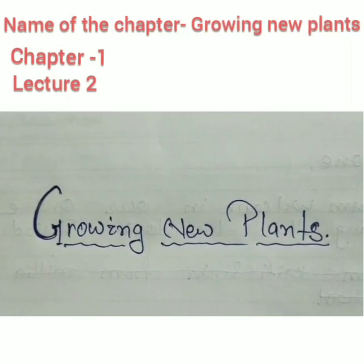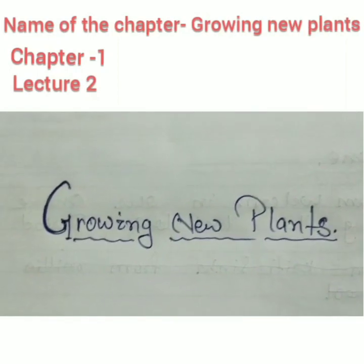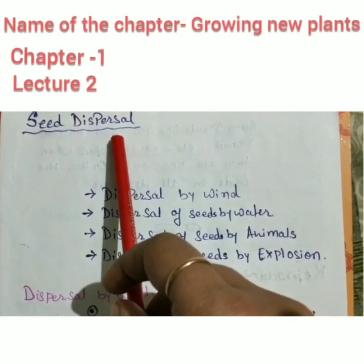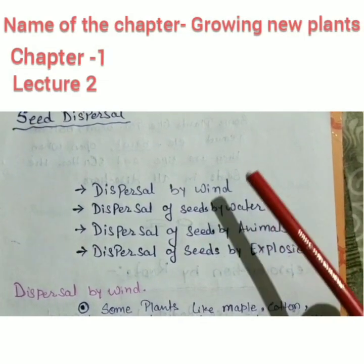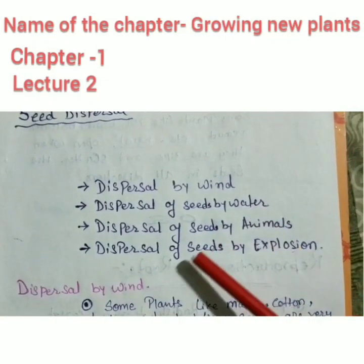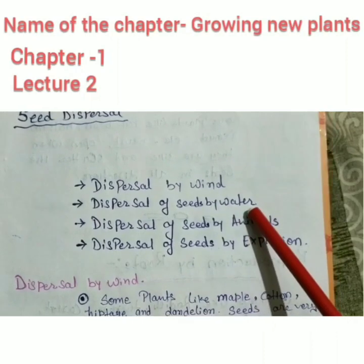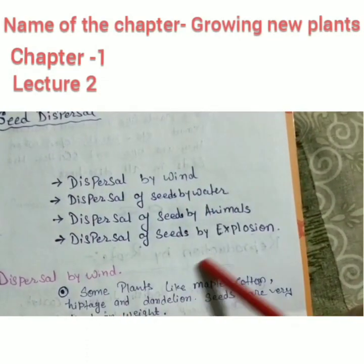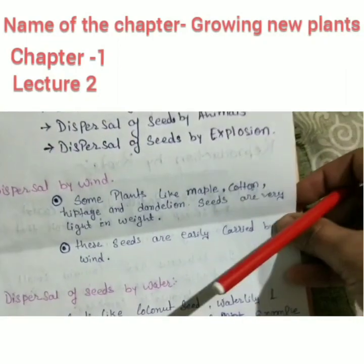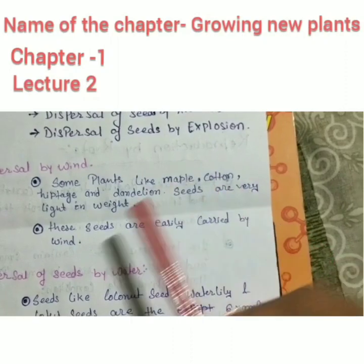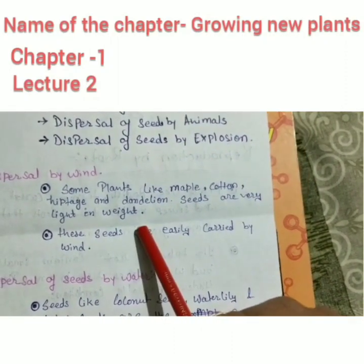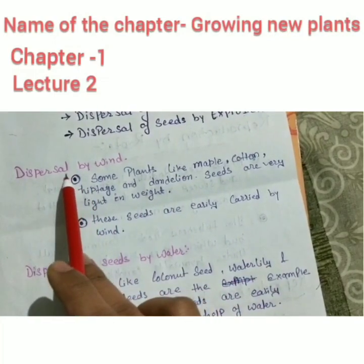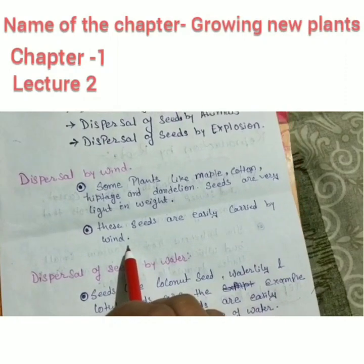In the first lecture, we already discussed how reproduction takes place in green plants and what seed dispersal means. Seed dispersal is the process of spreading seeds to different places. Dispersal by wind: some plants like maple, cotton, hyptage, and dandelion have seeds that are very light in weight, so they are easily blown by the wind and carried to different places.